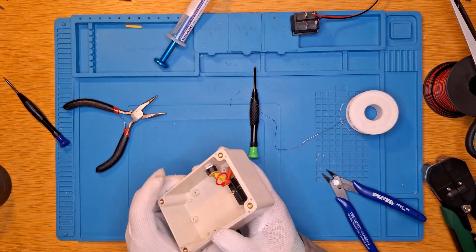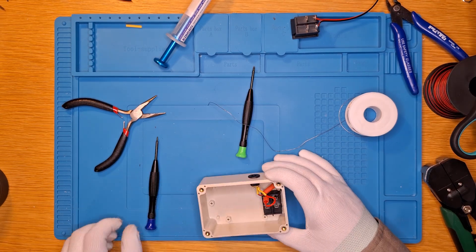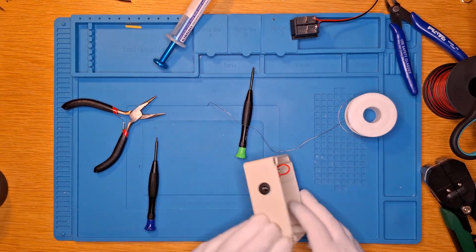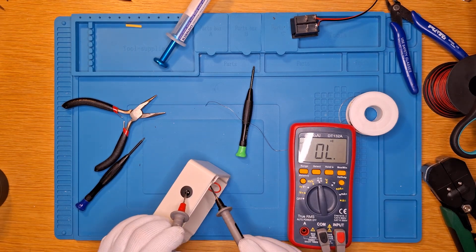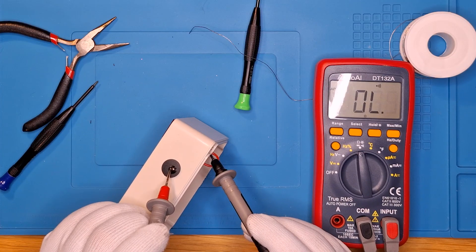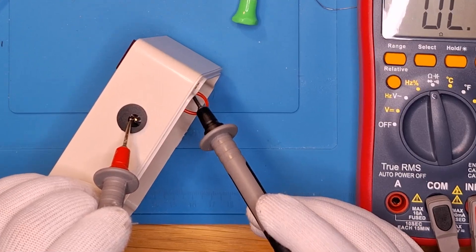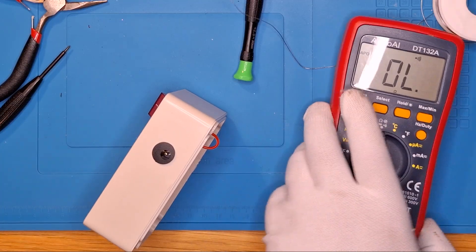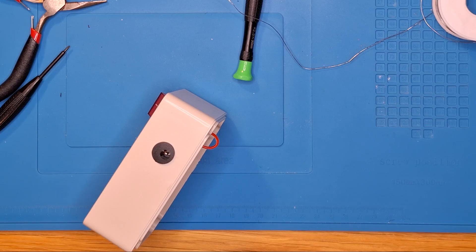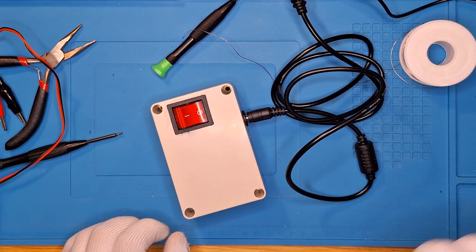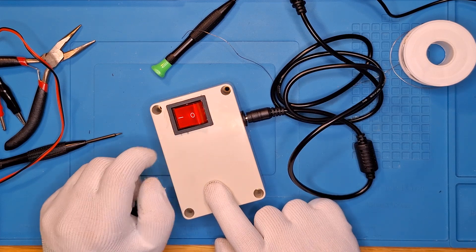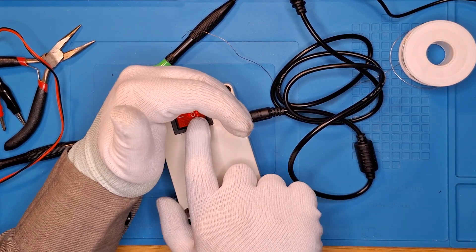At the very end we pull out the multimeter and switch it to beep mode. If it beeps, it means the connections are good enough and everything works as it should. And here is the result, so now it should turn on, or at least it should turn on. And it does!